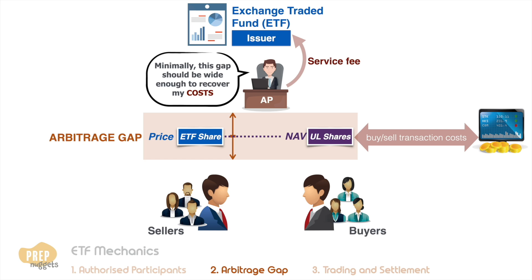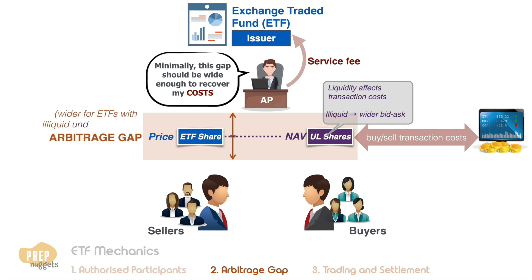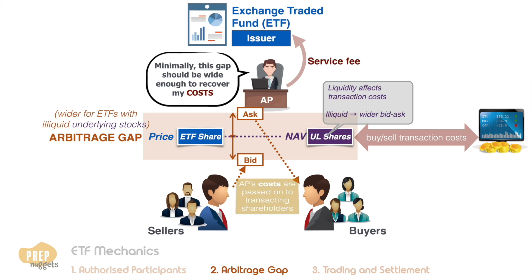The liquidity of the underlying shares plays an important role in determining transaction costs. Illiquid securities have wider bid-ask spreads, which translates to higher transaction costs for the AP. As such, the arbitrage gap for ETFs with illiquid underlying stocks may be wider. Arbitrage gaps can manifest in the form of the bid-ask spread on the ETF shares, and can be seen as the passing of costs incurred by the AP to the transacting shareholders.